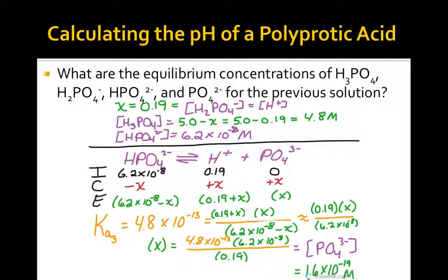Notice that in each of these successive dissociation reactions, the concentration of the hydrogen ion was never significantly changed, which is why pH calculations for polyprotic acids will typically involve only the first dissociation step.